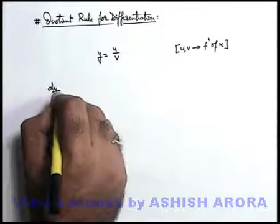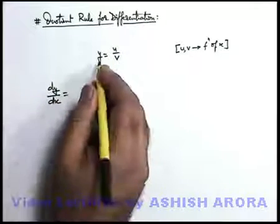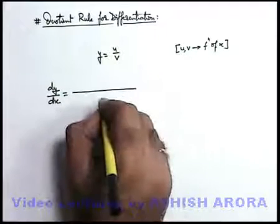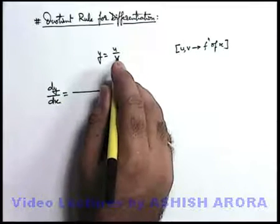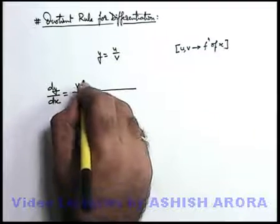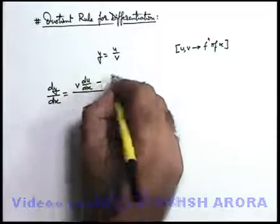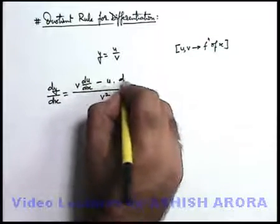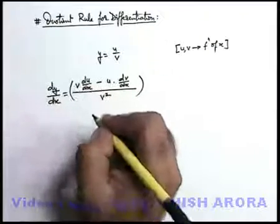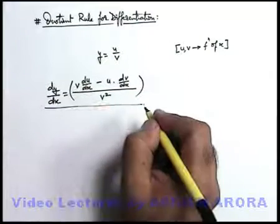In this situation, the direct rule for finding d-y by d-x says: in the denominator we keep the square of the denominator function. In the numerator, we keep the denominator as it is and differentiate the numerator, minus we keep the numerator as it is and differentiate the denominator. This is the relation we use for the quotient rule — just keep this relation in mind.